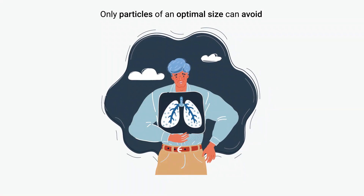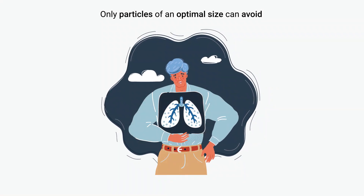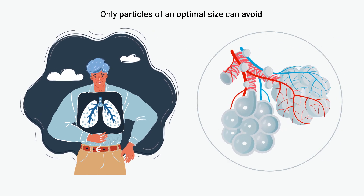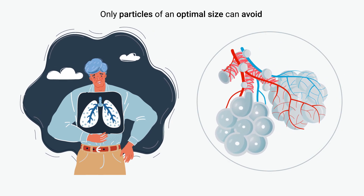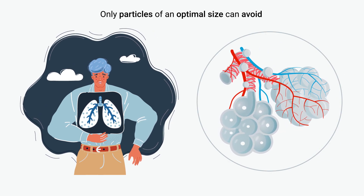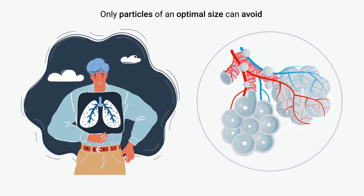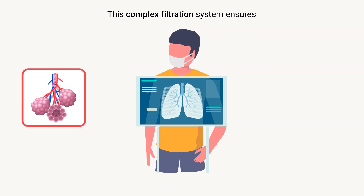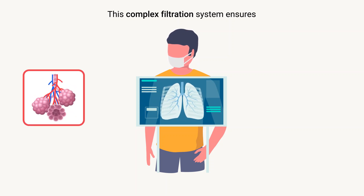Only particles of an optimal size can avoid being trapped and make it all the way to the alveoli, the tiny air sacs where gas exchange occurs. This complex filtration system ensures that only a few particles ever reach the alveoli and enter the bloodstream, where they can cause significant health problems.